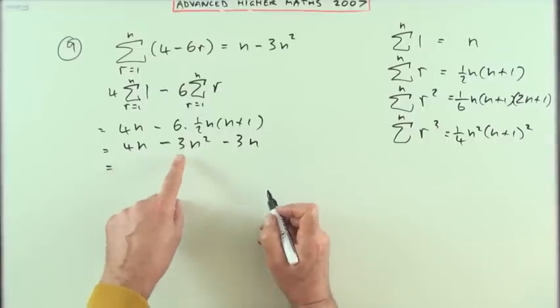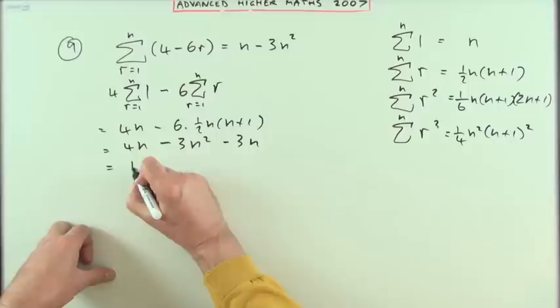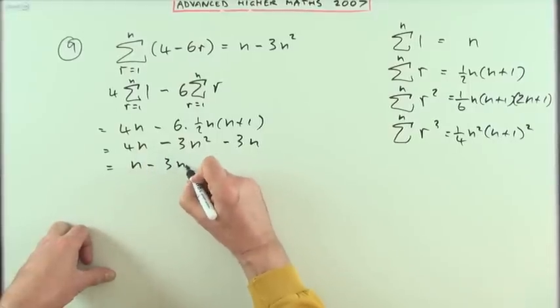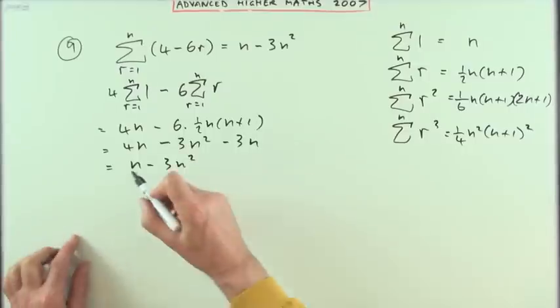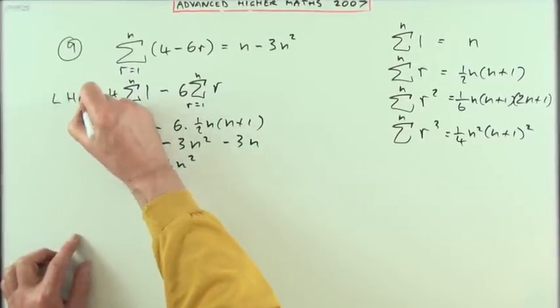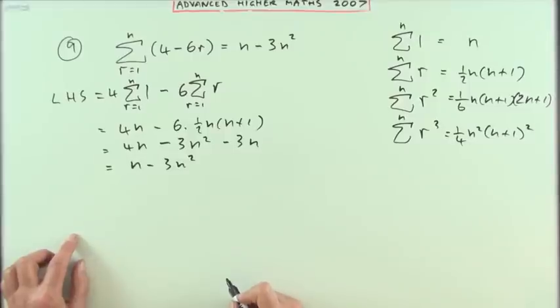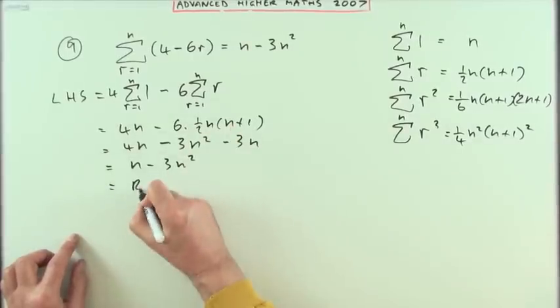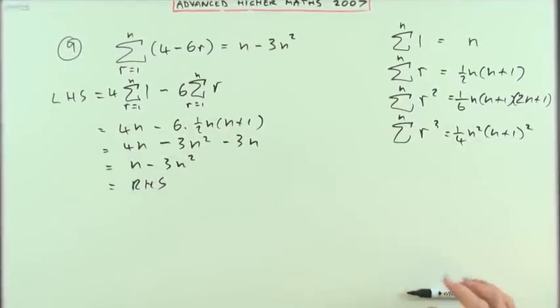Tidying that up, I've got 4n minus 3n is single n, minus 3n squared. Of course, I should have started off by saying I'll take the left hand side and show that I produced the right hand side. There it is, that's the first part.